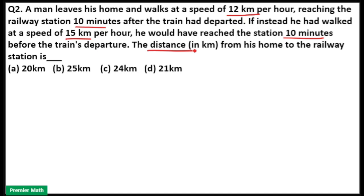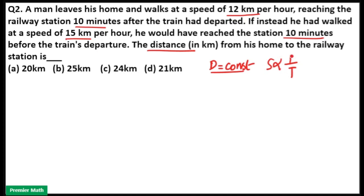We have to find the distance from his home to the railway station. Here, distance is constant — at 12 km per hour and 15 km per hour, he is travelling the same distance from his home to the railway station. That means distance is constant, so speed will be inversely proportional to time. Whenever distance is constant, take the speed ratio.